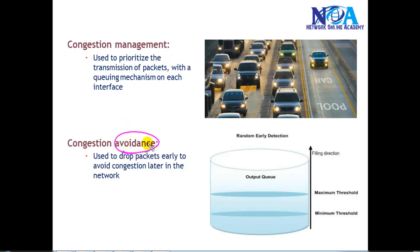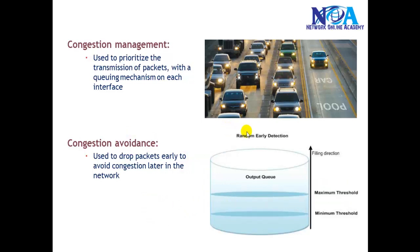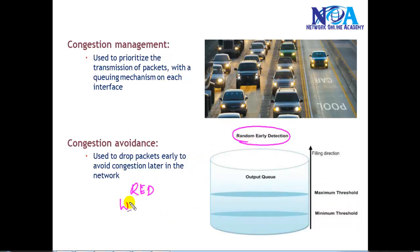There is one more mechanism called congestion avoidance. Instead of waiting until the network actually gets congested and reaches its limit before dropping packets, congestion avoidance randomly detects and drops low priority packets before the maximum threshold value is reached. We have mechanisms called RED (Random Early Detection) and WRED (Weighted Random Early Detection), which are congestion avoidance mechanisms that drop packets before the network gets congested.